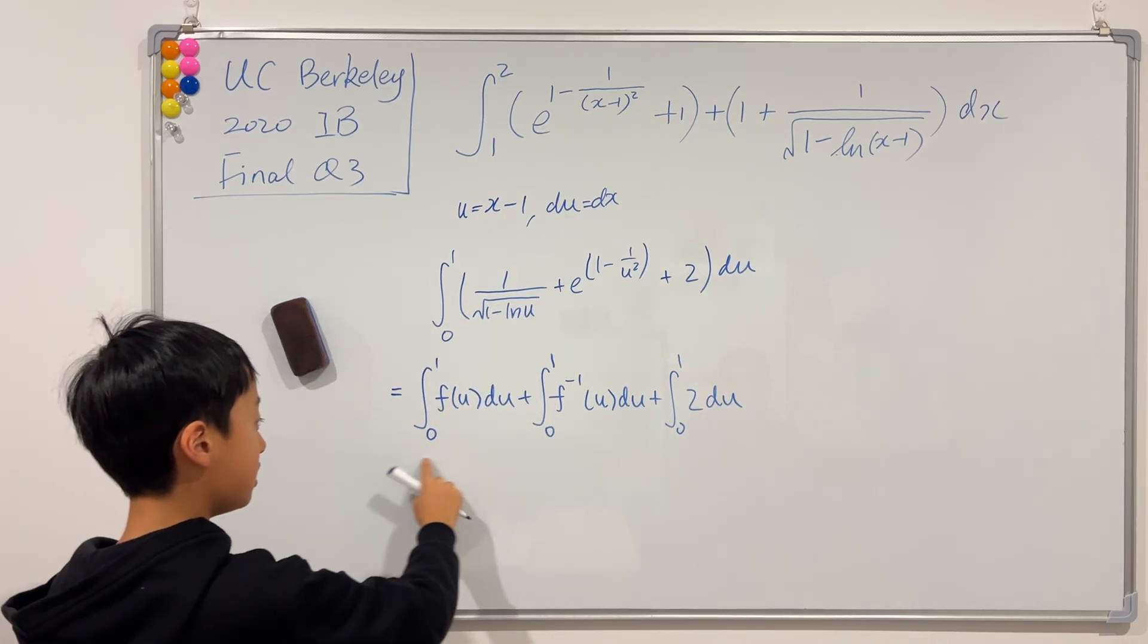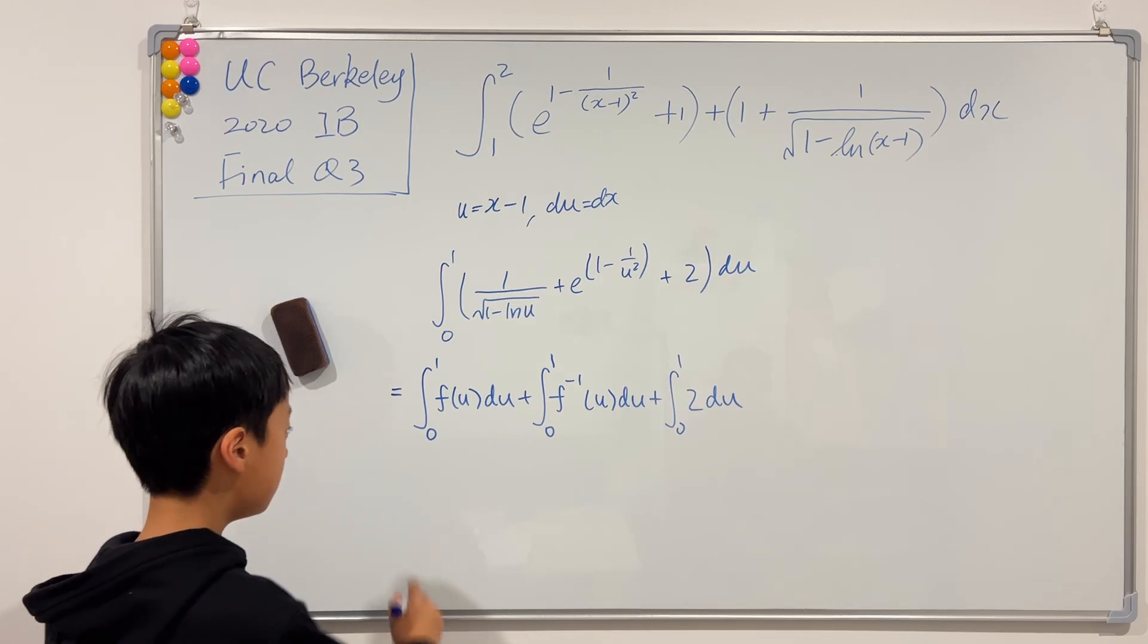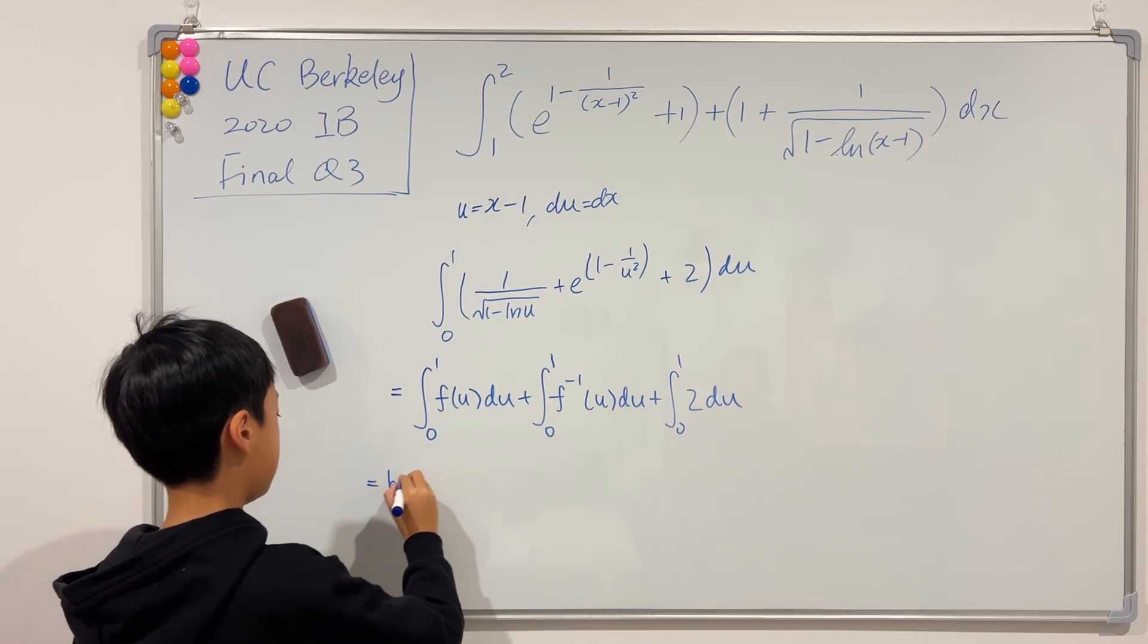So for these two, we can use the formula that we used in the JEE Advanced question. So it'll be b·f(b) minus a·f(a), and then plus 2. Extremely simple.